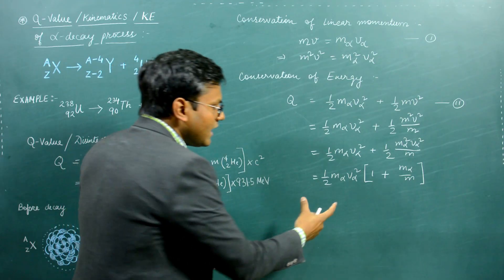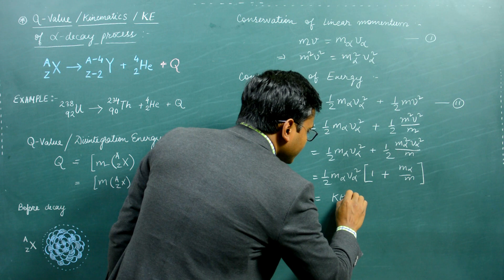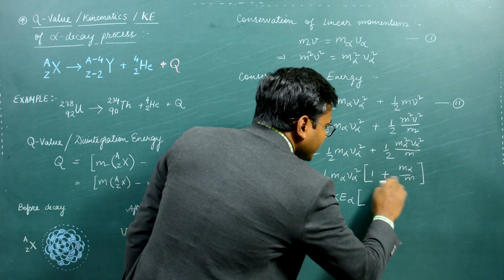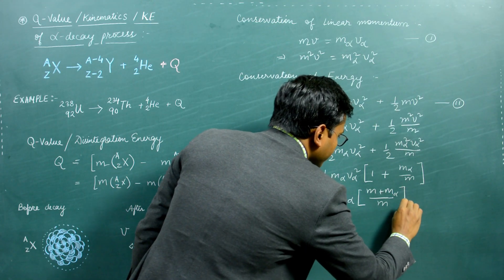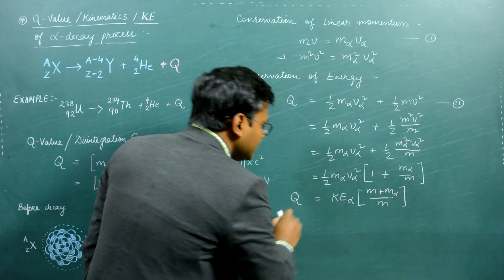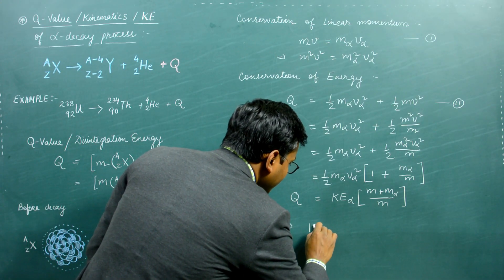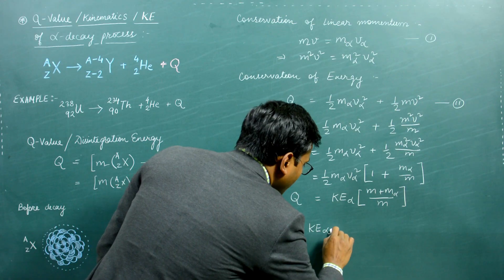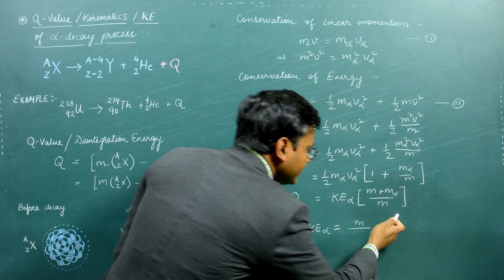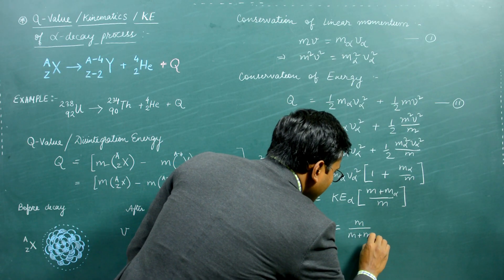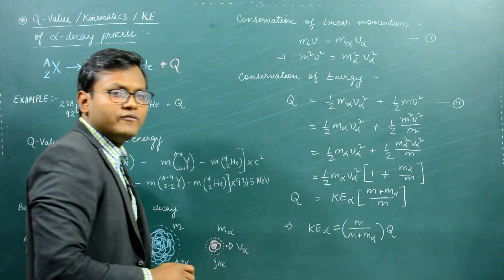The factored term is the kinetic energy of the alpha particle, and the bracket gives (M + M_alpha)/M. So the Q value equals the kinetic energy of the alpha particle multiplied by (M + M_alpha)/M. Rearranging, the kinetic energy of the alpha particle equals M divided by (M + M_alpha), multiplied by the Q value of the nuclear reaction.